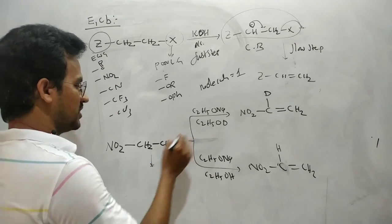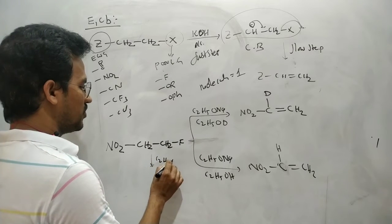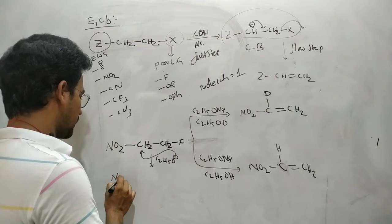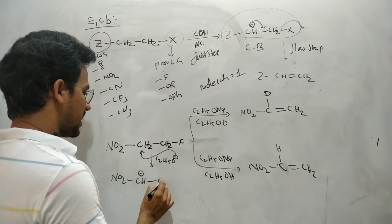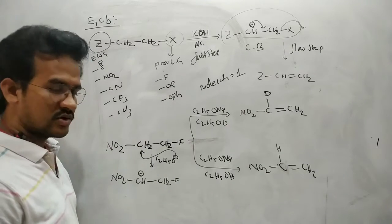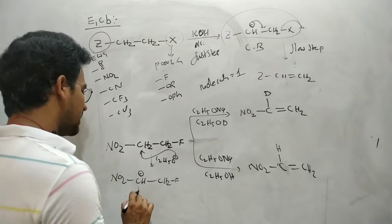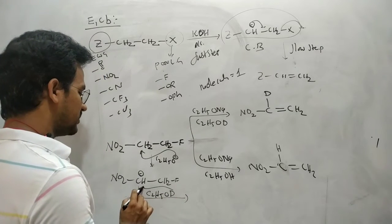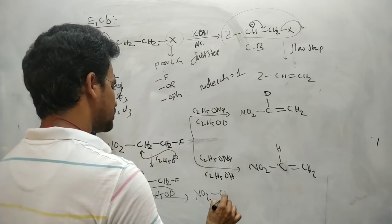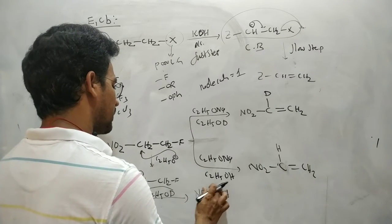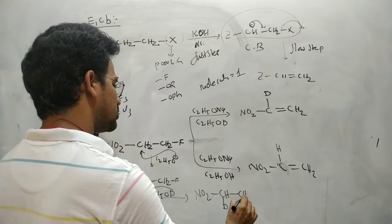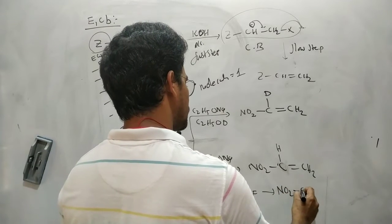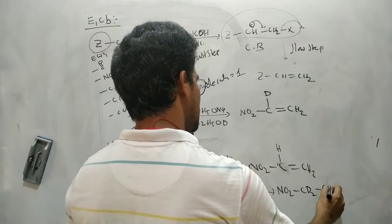In the first step, C2H5ONa (minus Na+) removes the acidic proton, giving NO2-CH⁻-CH2F (the carbanion/conjugate base). This carbanion readily accepts deuterium from the solvent C2H5OD, giving NO2-CHD-CH2F. This process is repeated one more time, giving NO2-CD2-CH2F.